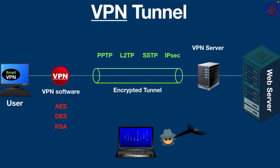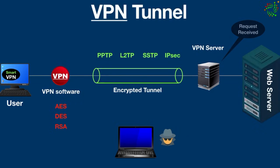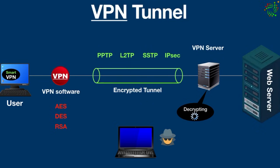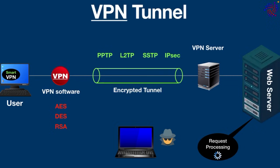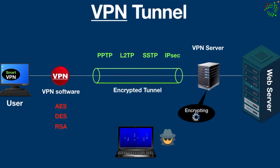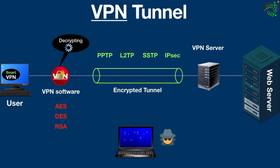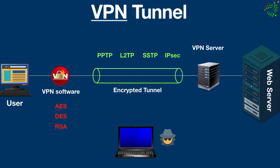In the third step, the request travels through the secure encrypted VPN tunnel, ensuring that data is not intercepted or read by anyone along the way. In the next step, the VPN server receives the request, decrypts the data, and forwards the request to the destination, like a web server. The web server then processes the request and sends back a response, which the VPN server encrypts and sends back through the secure VPN tunnel. Finally, the VPN software on the user's machine decrypts the received data and the device displays the result, such as the requested web page.